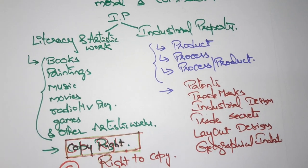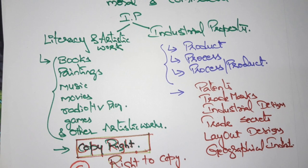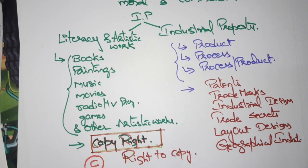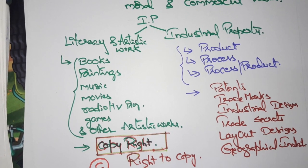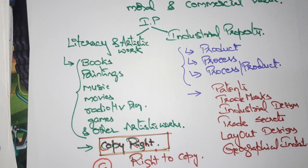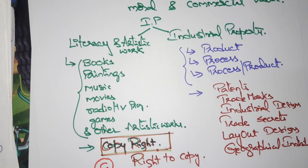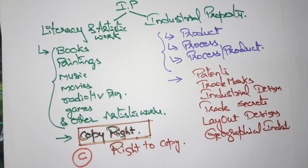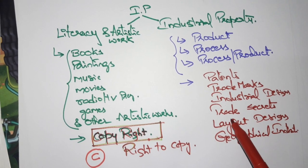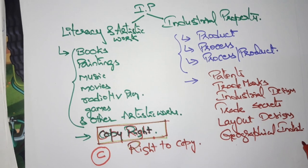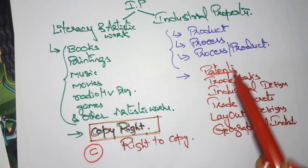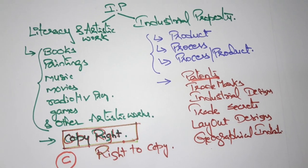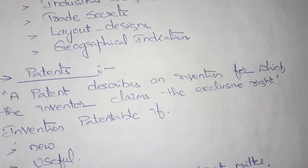If it may be a product, process, or both, you are going to take security for it — that is nothing but industrial property. You can take security for industrial property by taking patents, trademarks, industrial designs, trade secrets, layout designs, and geographical indications. First, we will see what a patent is.